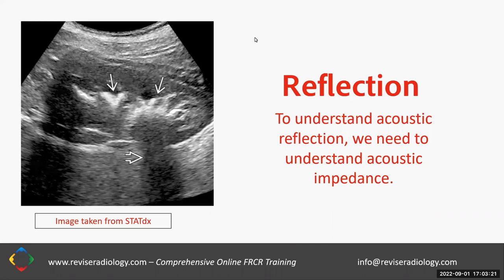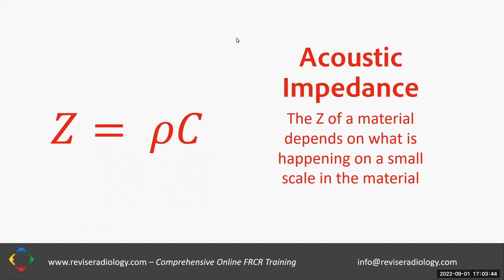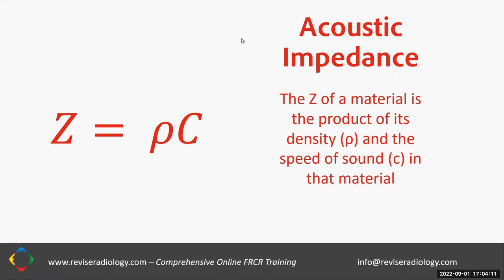In order to understand reflection, we need to understand acoustic impedance. Acoustic impedance is a property of individual materials and has the symbol Z. The acoustic impedance of a material depends on what's happening on a small scale — it's a measure of how easy it is for sound to pass through the material, depending on the atomic configuration. The acoustic impedance of a material is the product of its density and the speed of sound C in that material.